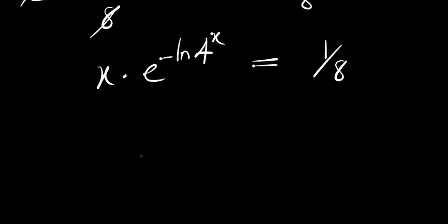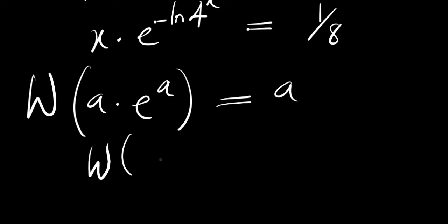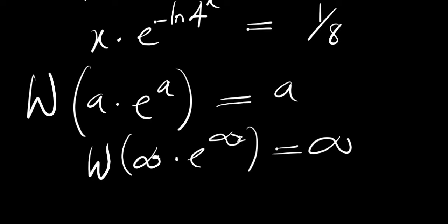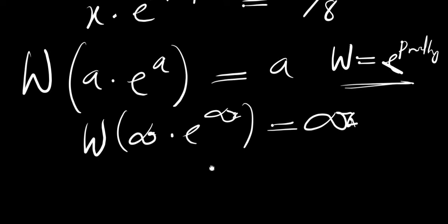We can make use of a particular function called the Lambert W function, which states that if you have W of a times e^a, this equals a. So if you have W of (something times e^(that something)), you get that something back. In your calculator this corresponds to e raised to the power of the product log — that is the same as the Lambert W function.